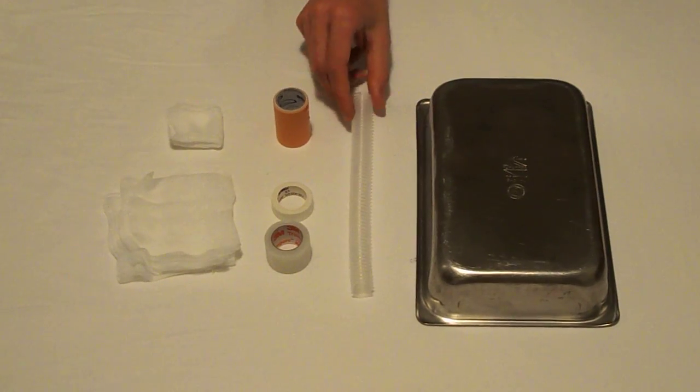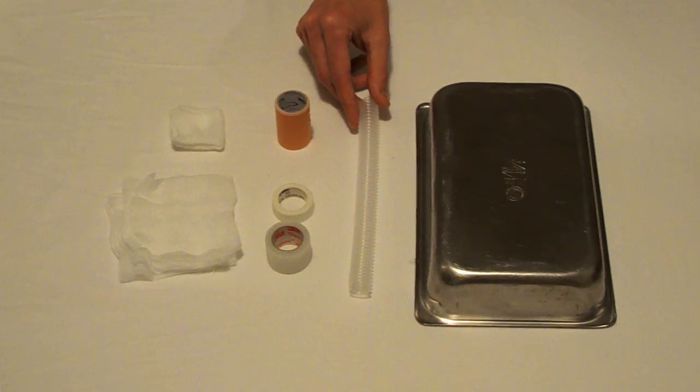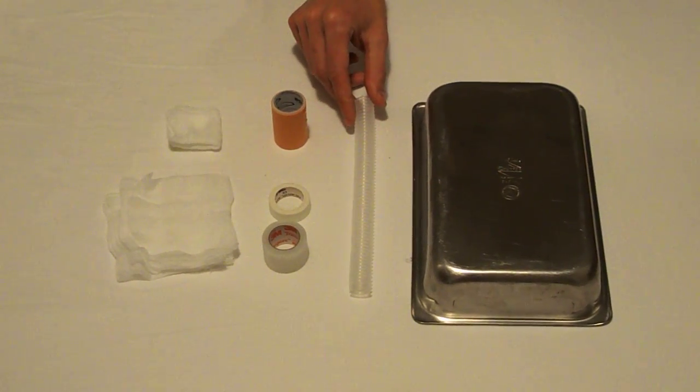You'll also need a trachea. Ventilator tubing is ideal for this. The double thick ventilator tubing is best but you could also use the single thick.